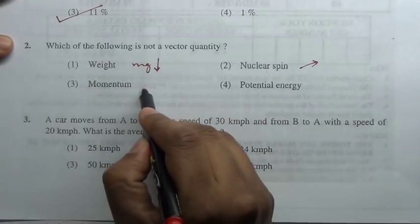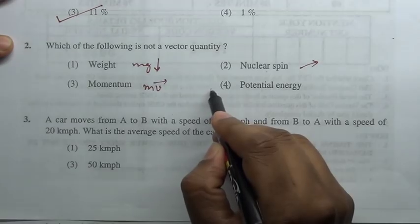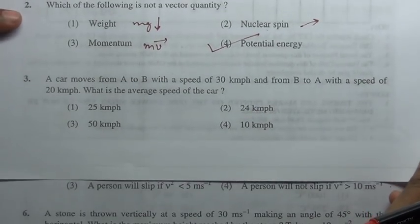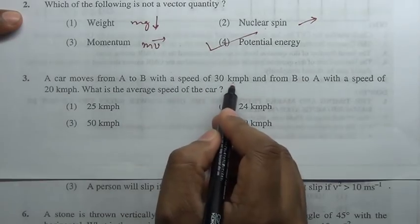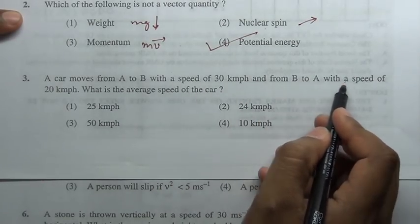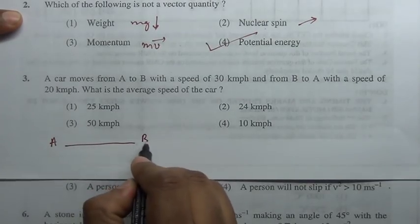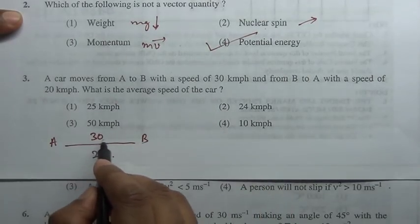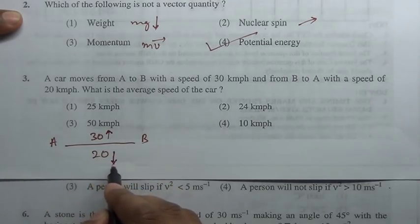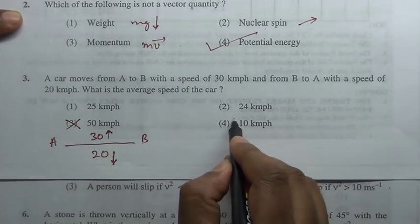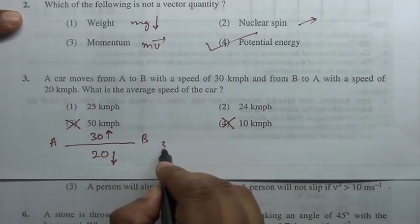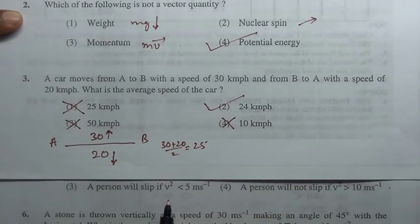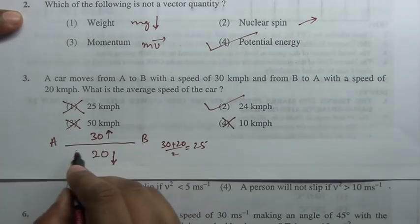A car moves from A to B with a speed of 30 kilometer per hour, from B to A with a speed of 20 kilometer per hour. What is the average speed of the car? It cannot be greater than 30 and less than 20, so this is not the option. Less than 20, this is not the option. 30 plus 20 by 2 is 25, this is not the option. So it is 24 kilometer per hour.